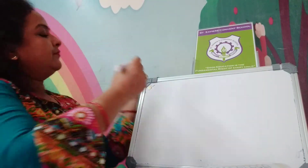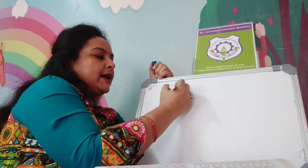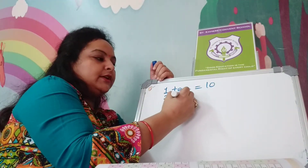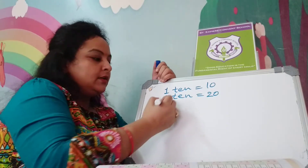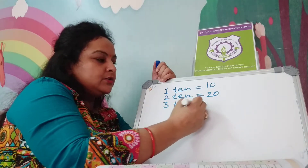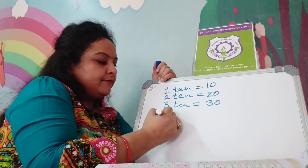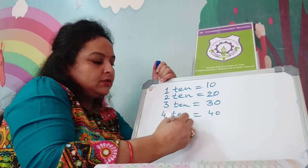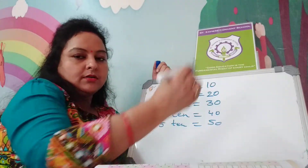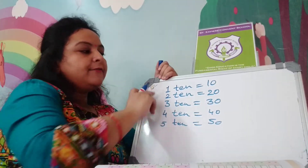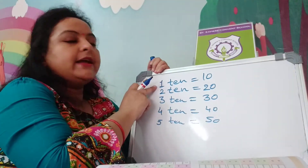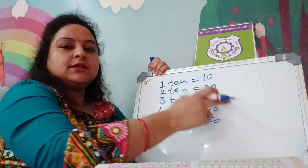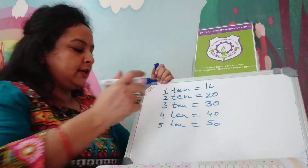Now, tell me one more thing. 1 ten is equal to 10. 2 tens is equal to 20. 3 tens is equal to 30. 4 tens is equal to 40. 5 tens is equal to 50. Anywhere it is written 1 ten, you will write 10. 2 tens is 20, 3 tens is 30, 4 tens is 40, and 5 tens is 50.